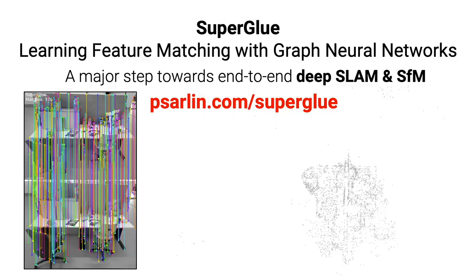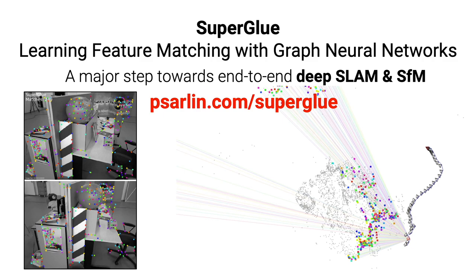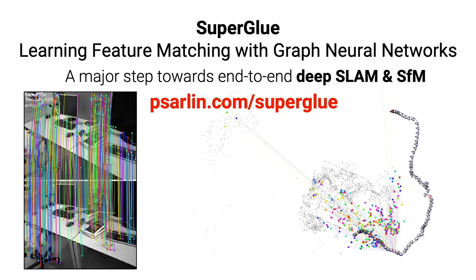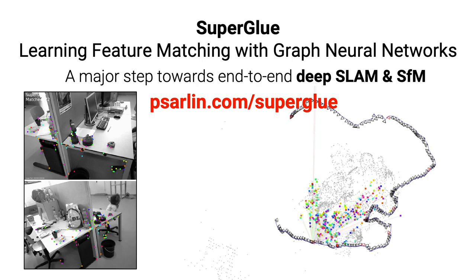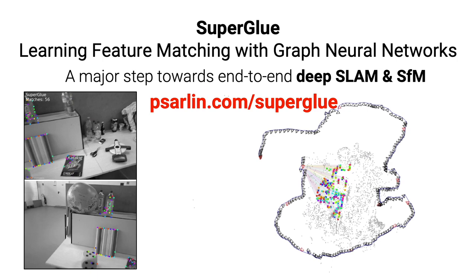We thus believe that SuperGlue is a major milestone towards end-to-end deep SLAM and structure-from-motion. Please check our paper for more results, visualizations, and a deeper understanding of its inner working. Try it yourself with our pre-trained models available on GitHub. Run our demo on your data at more than 15 frames per second and add some SuperGlue to your image matching pipeline. Thank you.